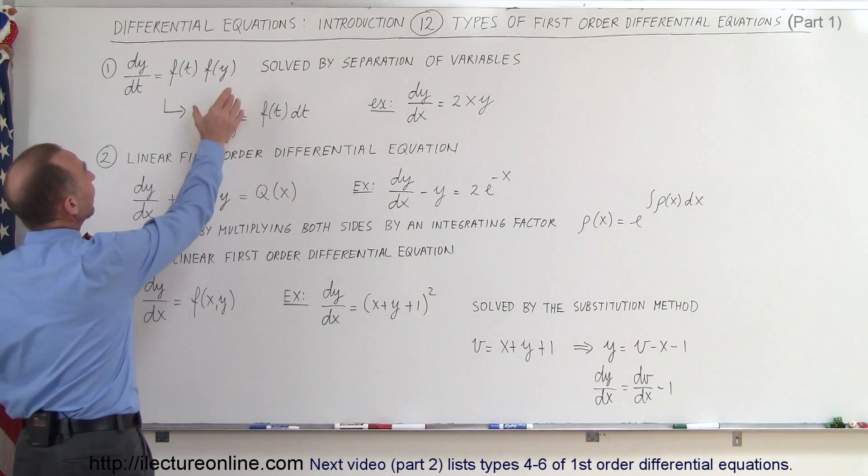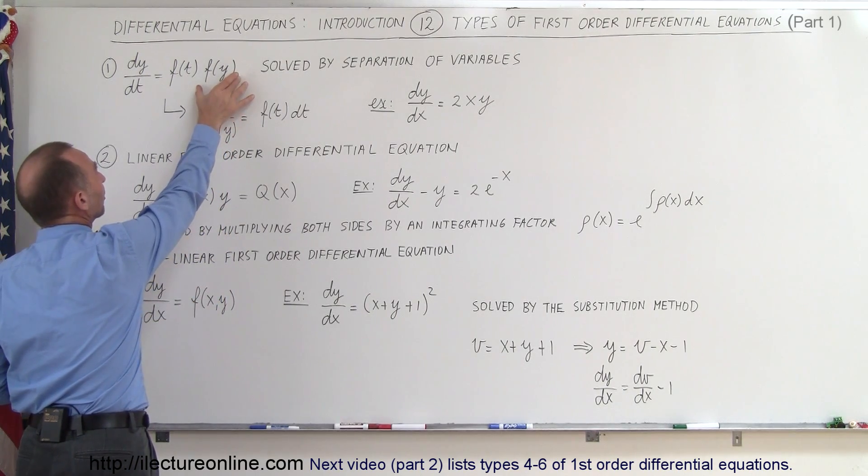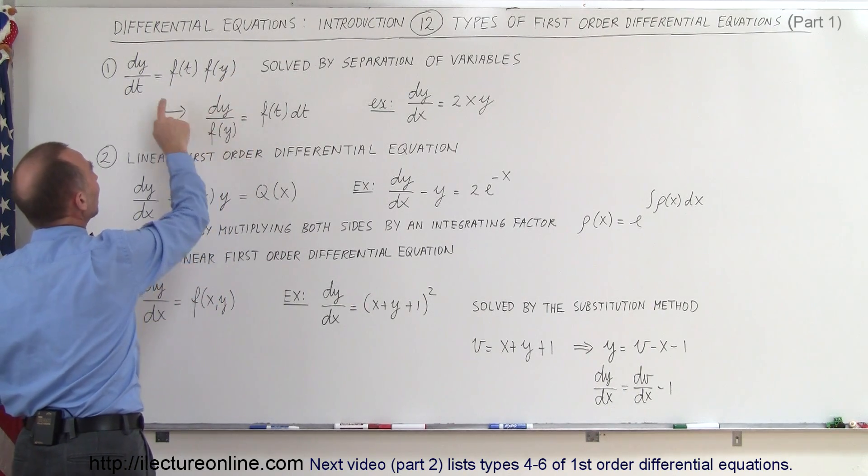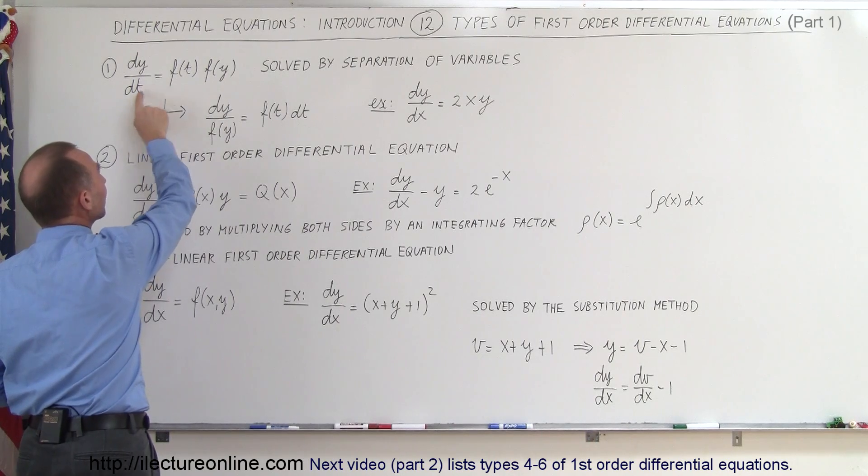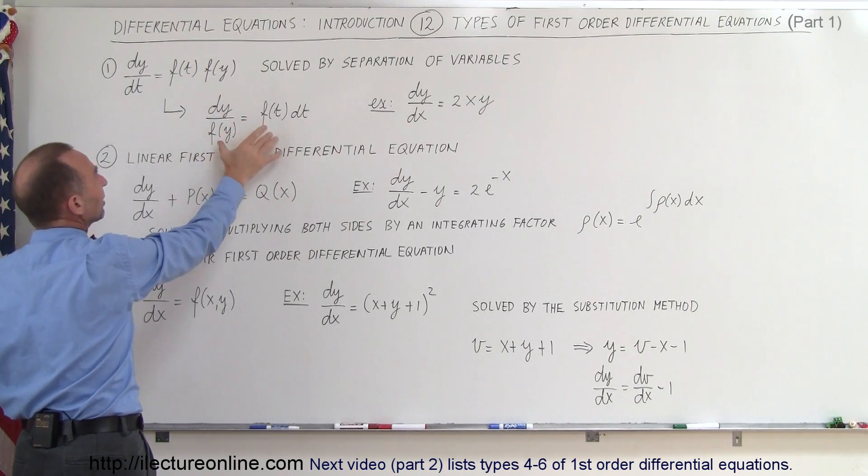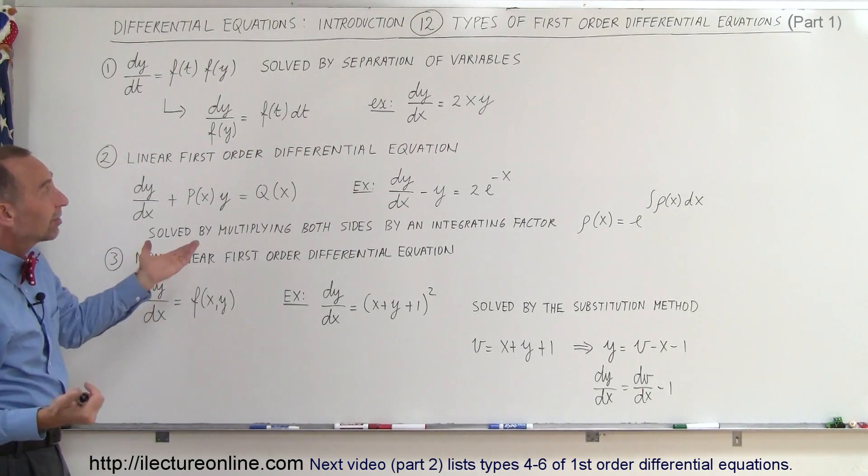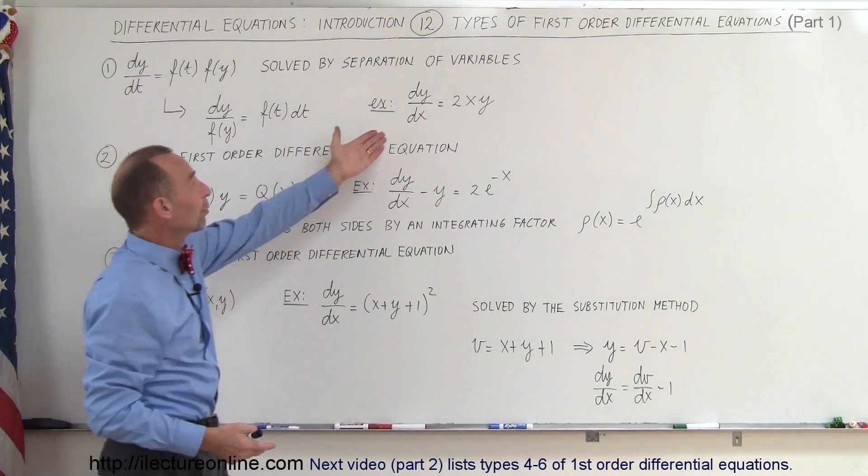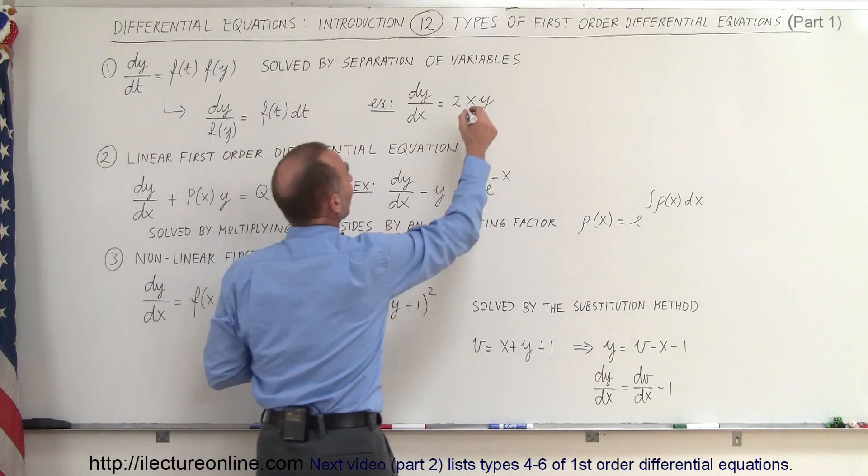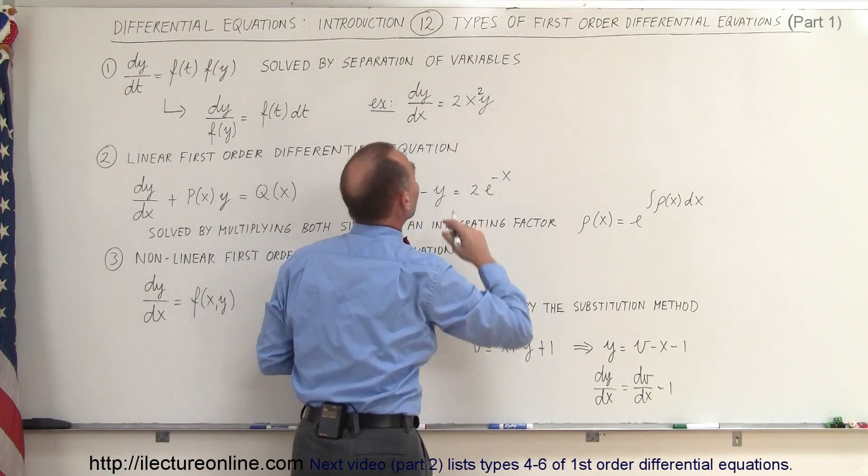With other words we can take the y variable and move it underneath the dy and we can take the dt over here and move there along with the f of t, so it looks like this. And now we can integrate both sides of the equation. An example, a simple example of that would be of course something like this, or if you like we can make this you know 2x squared times y.